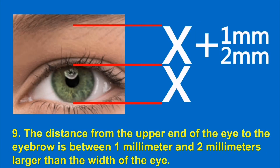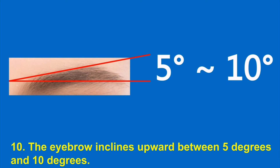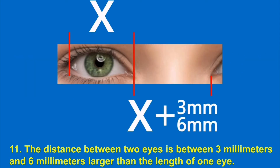9. The distance from the upper end of the eye to the eyebrow is between 1 millimeter and 2 millimeters larger than the width of the eye. 10. The eyebrow inclines upward between 5 degrees and 10 degrees. 11. The distance between two eyes is between 3 millimeters and 6 millimeters larger than the length of one eye.